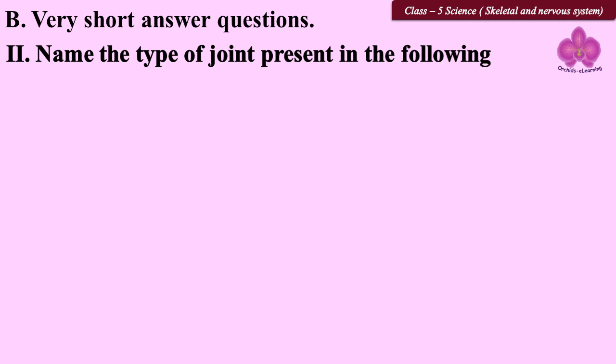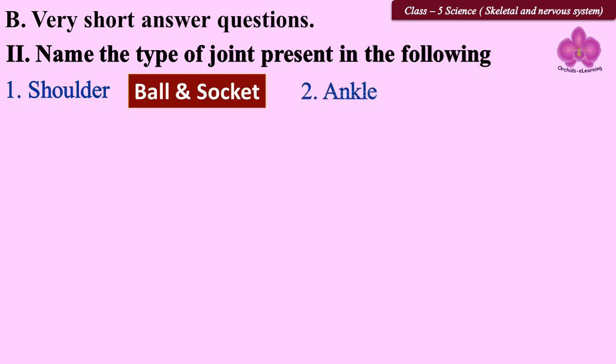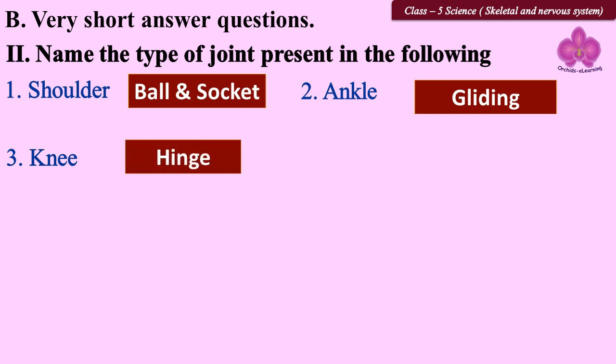Name the type of joint present in the following: shoulder - ball and socket, ankle - gliding, knee - hinge.